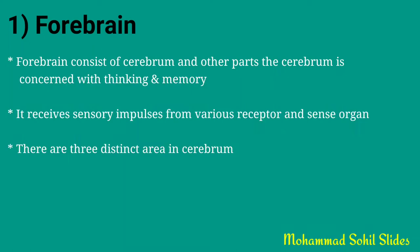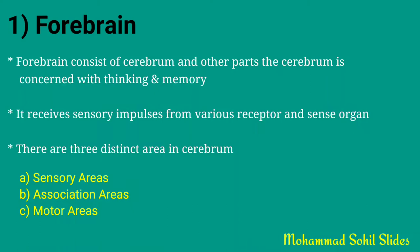First we will see the forebrain. The forebrain consists of the cerebrum and other parts. The cerebrum is concerned with thinking and memory. It receives sensory impulses from various receptors and sense organs. There are basically three distinct areas in the cerebrum: first, the sensory area; second, the association area; third, the motor area.